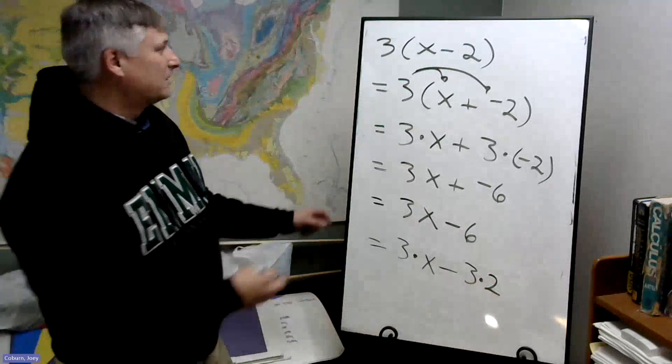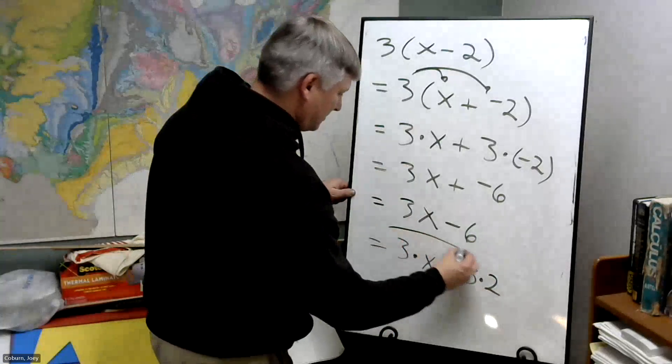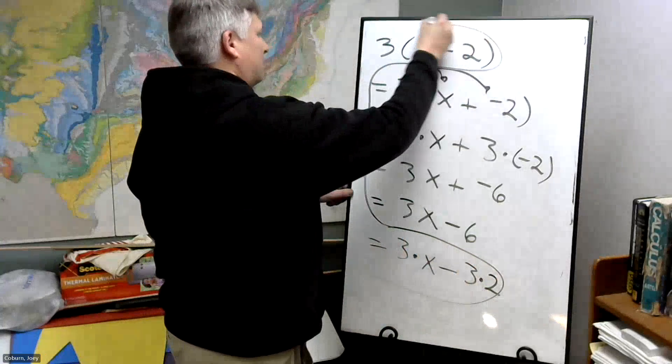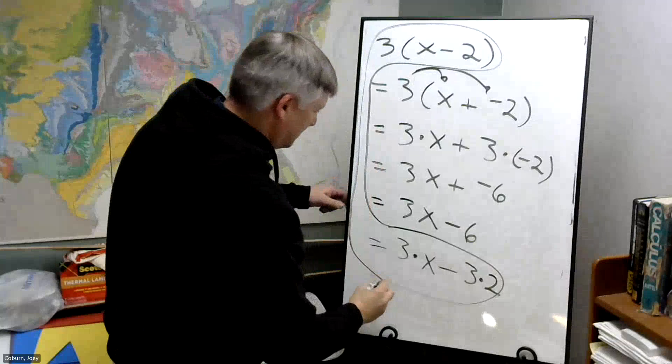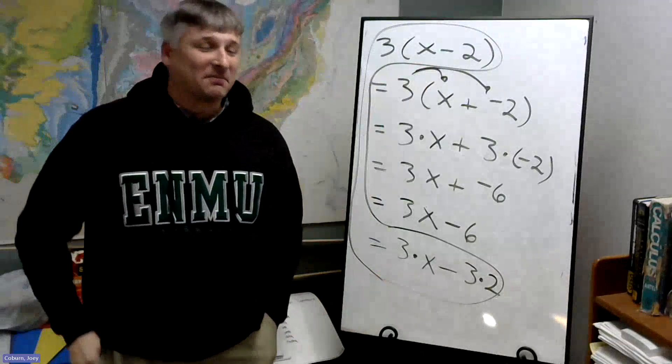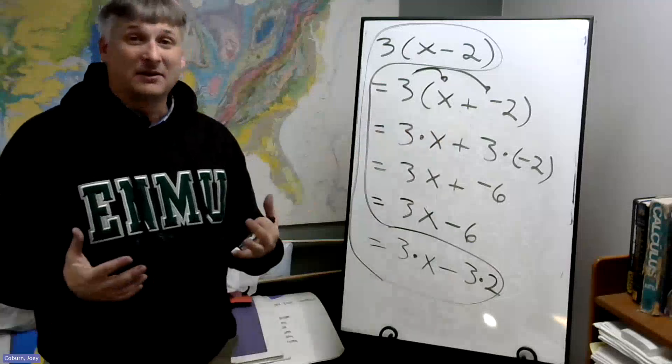And it turns out, if we cut out all the middle steps, we can distribute even with a minus sign. It was that trick that let us do it.